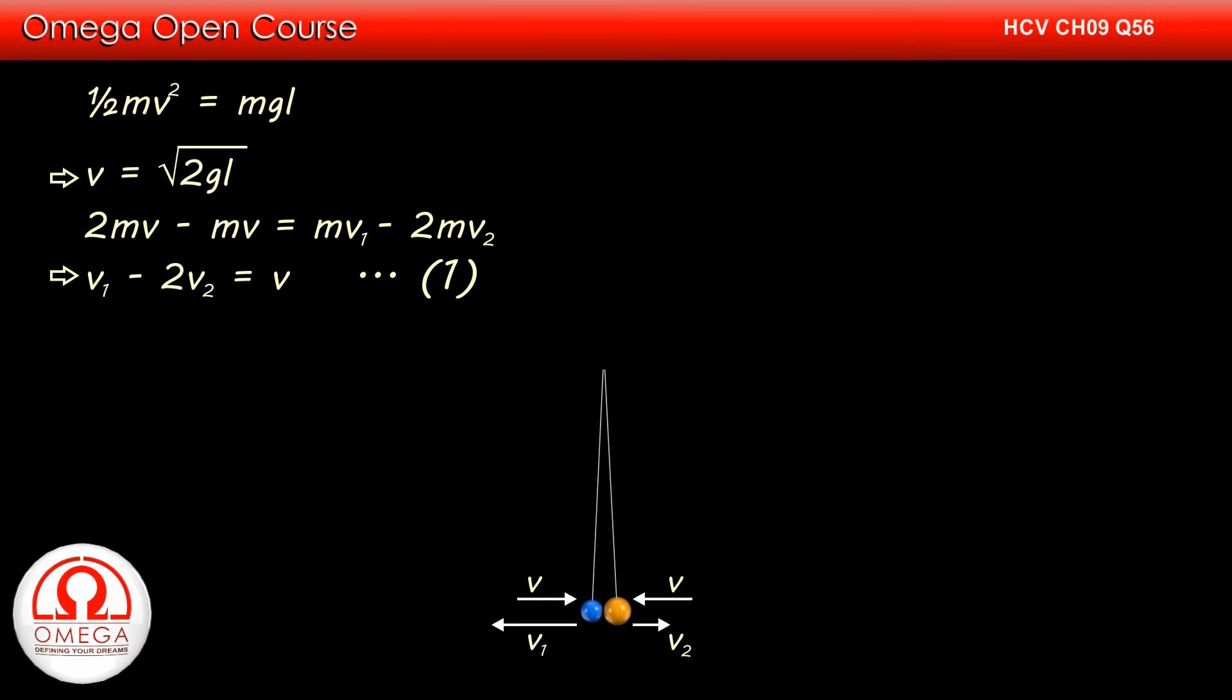Since before the collision, both the balls are moving with speed v in opposite directions, their approach speed is 2v. After the collision, the balls are moving with speed v1 and v2 in opposite directions. Therefore, the separation speed is v1 plus v2.